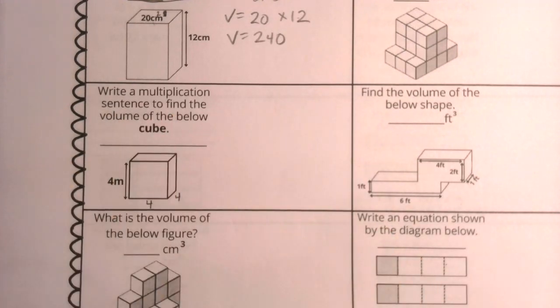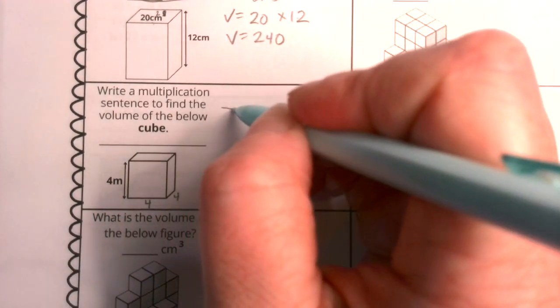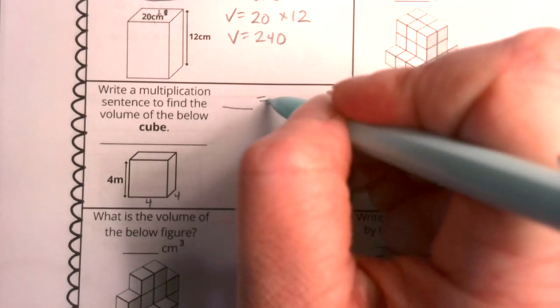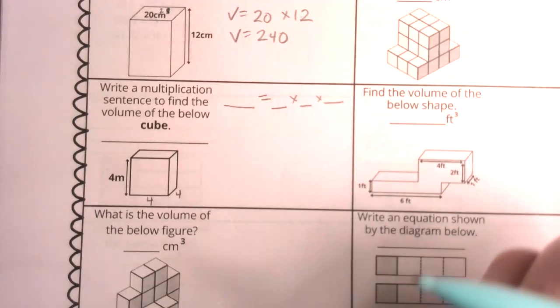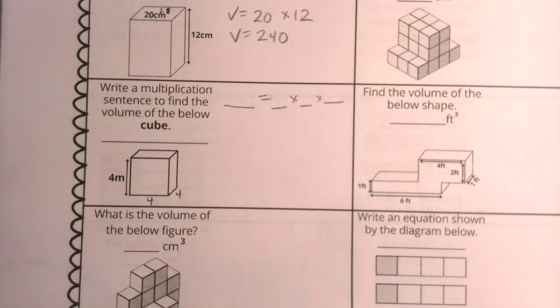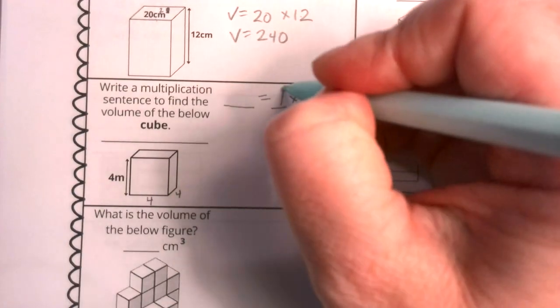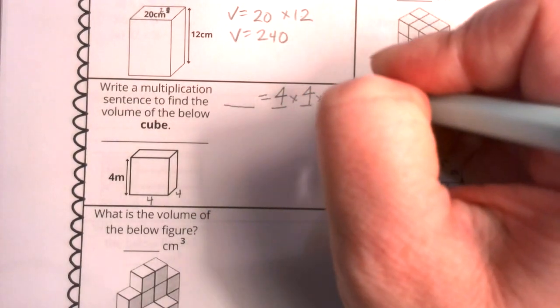We're going to write a multiplication sentence. We're going to say that the volume equals the length times the width times the height. That's what we've done time and time again with this problem. So this is a cube, so we're going to have four times four times four.